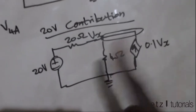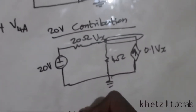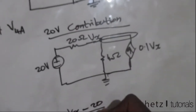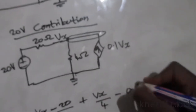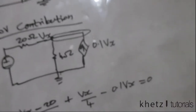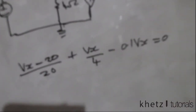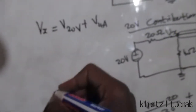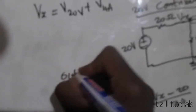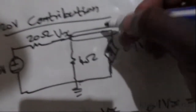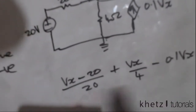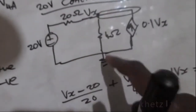Using nodal analysis to find Vx, we write: (Vx − 20)/20 + Vx/4 − 0.1Vx = 0. We assign these signs using the rule that currents going out of the node are positive and those going into the node are negative. The 0.1Vx dependent source term is negative because it goes into the Vx node; all others are positive as outgoing currents.